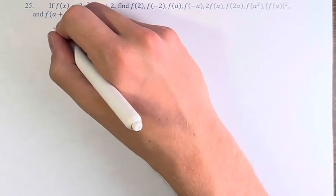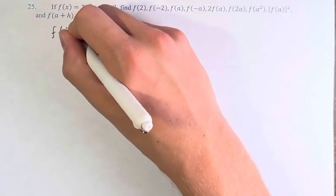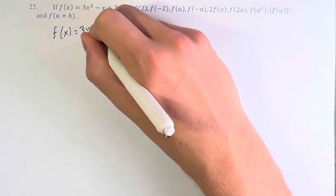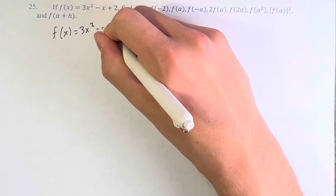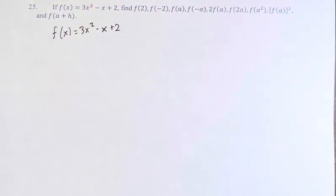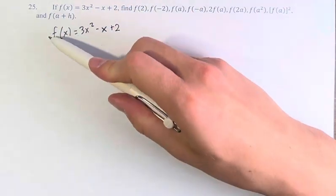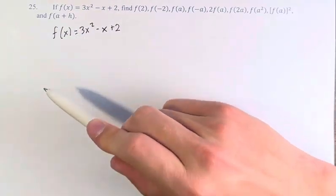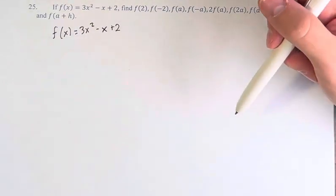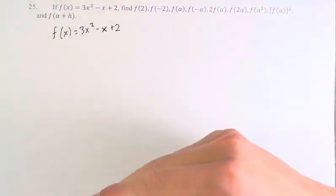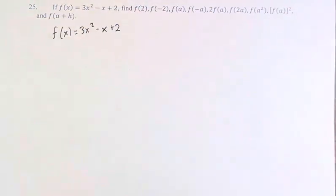So before we begin, let's just write down our function. f of x is equal to 3x squared minus x plus 2. And what this function means is, for any x that we plug in, we're going to do this operation to it, and that will be our output. We're going to use that fact to calculate it for all of these different outputs.